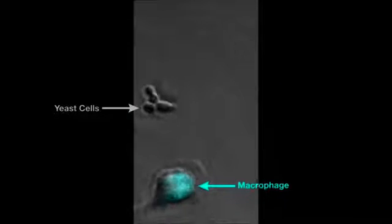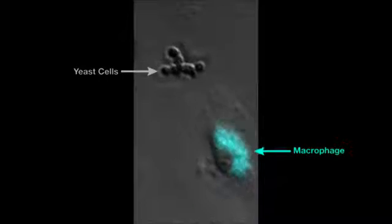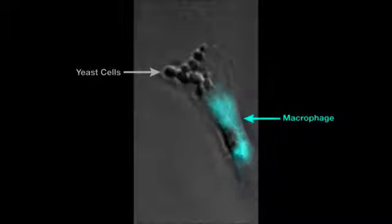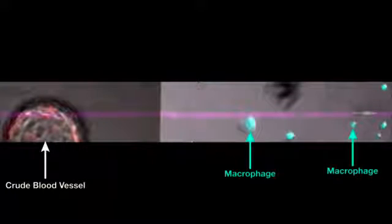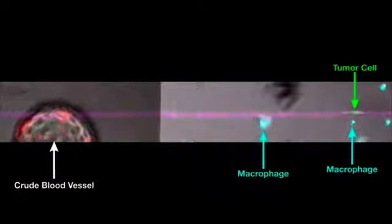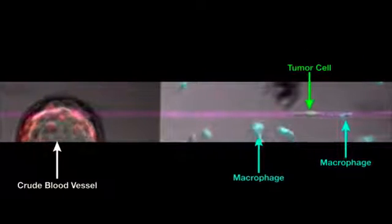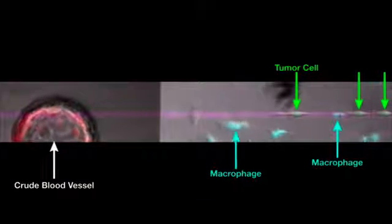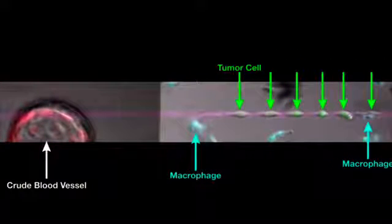And remember the macrophages that are supposed to kill intruders? Watch what happens when macrophages and yeast cells are put together in a petri dish. Job well done. But when we added the macrophages in the presence of cancer cells, they played their double agent role. Instead of killing the tumor cells, they sent signals so that even cells that were very far away were able to easily find their way to the crude blood vessel, just like in living tissue.